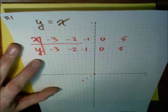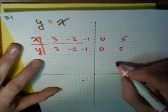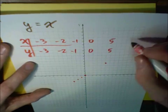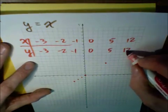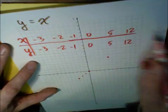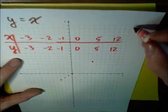If I put in 5, y will be 5. Now here is 5, 5. If I put in 12, y will be 12. And again, I think you get the idea. Here's y is 12.